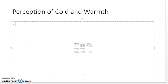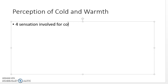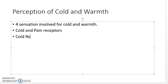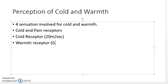Perception of cold and warm: humans sense warmth and cold at different variations. There are four types of sensory fibers involved. These include cold pain receptors, cold receptors with a fast conduction speed of about 20 meters per second, warm receptors at about 0.4 meters per second, and heat pain receptors.